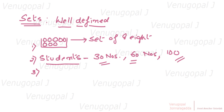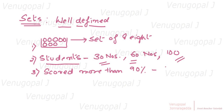A third example: a set of students who have scored more than 90 percent in 8th standard. That is very well-defined. Out of 100 students in a school, maybe 50 students have more than 90 percent. That number — 50 — is well-defined, so we know specifically that 50 students secured more than 90 percent.